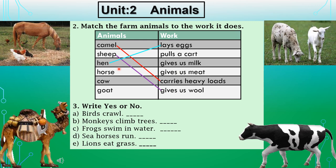Horse pulls a cart, so match horse with 'pulls a cart' in the second column. Next is cow — cow gives us milk. You all drink cow's milk, so match cow with 'gives us milk.' Last is goat — goat gives us meat. We eat mutton, which is goat's meat. So match goat with 'gives us meat.'